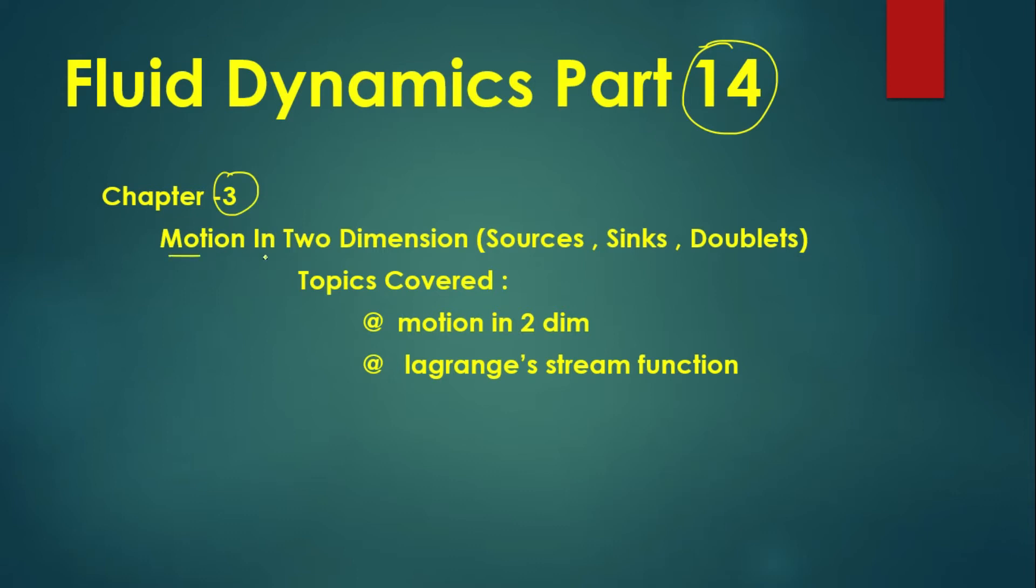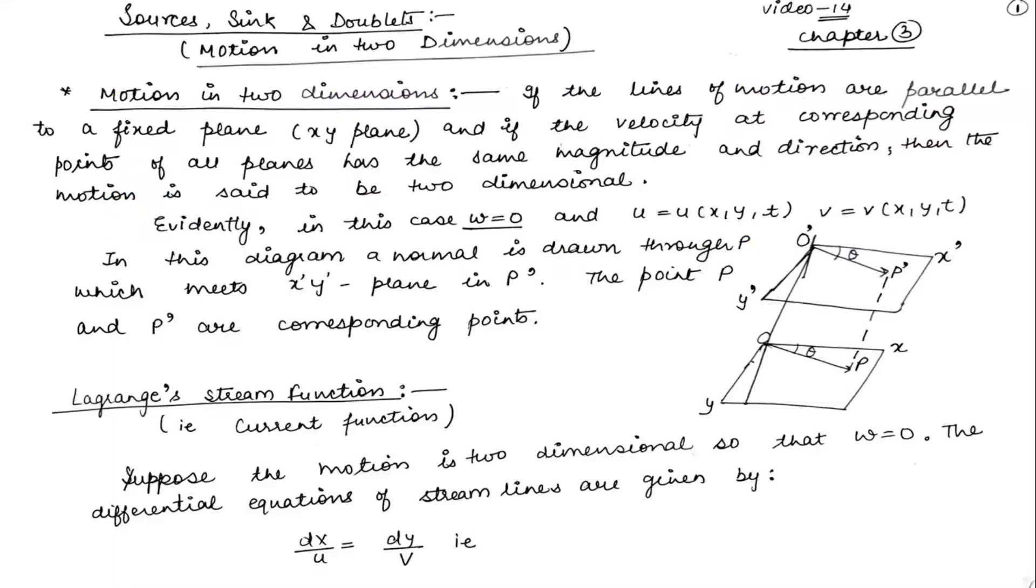Chapter number 3 is Motion in Two Dimensions, which includes sources, sink, and doublets. Topics I'm going to cover in the third chapter are motion in two dimensions and we will discuss Lagrange stream function.